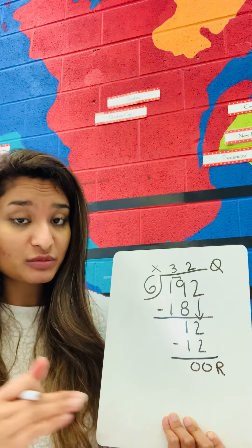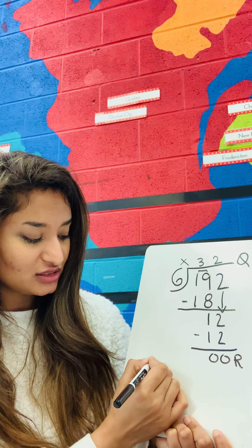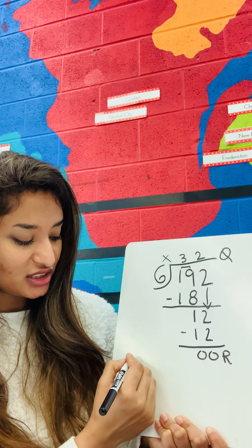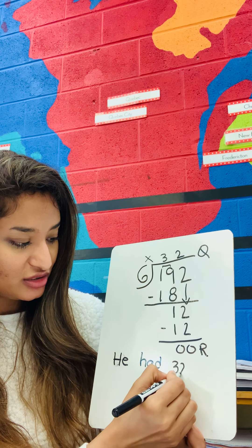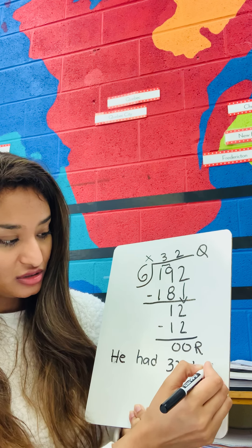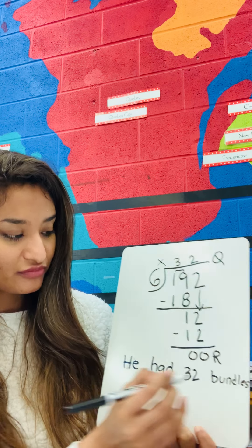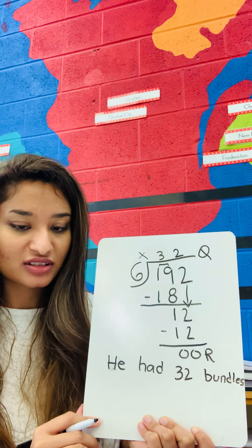So how many bundles did Mr. Kim have? He had 32 bundles. Now, in these word problems, you may sometimes have to draw a picture if you do not understand — that's okay, we always do it in the classroom. You can draw a picture to help you, or you can go straight to the calculation if you don't need to draw a picture. Good job — you have finished your week of math and I will see you next week in class.